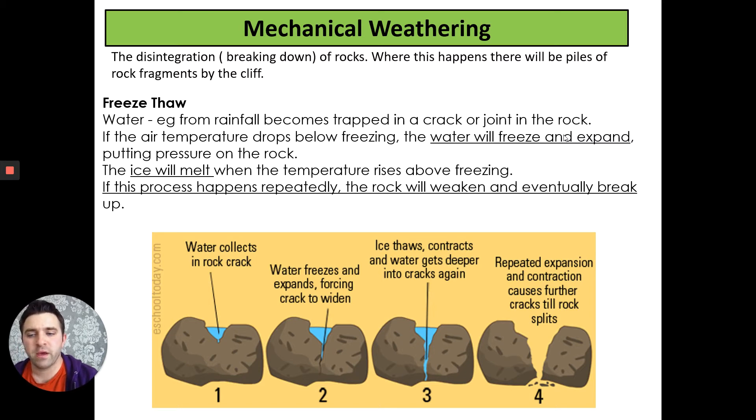The first one is freeze-thaw weathering. This is where we have water, for example from rainfall, becoming trapped in a crack or joint in the rock. As the air temperature drops below freezing the water freezes itself and expands which puts pressure on the rock. You can see that in the diagram. The water collects in the crack, it freezes and expands. When the temperature gets above freezing again, the ice melts and thaws, contracting and the water gets deeper into these cracks. If it repeatedly happens the rock will weaken and eventually will break up. You can see it can actually even split in half. This happens over and over again like a cycle.